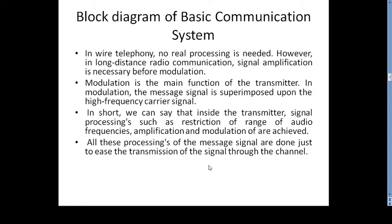Inside the transmitter, signal processing such as restriction of the range of audio frequencies, amplification, and modulation are achieved. All this processing of the message signal is done to make it easy to transmit through the channel. So the three processes performed at the transmitter site are: first, restriction of the range of audio frequencies; second, amplification; and third, modulation.